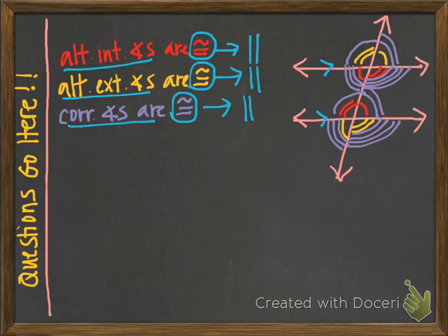Let's look at some of the other angle pairs — same side interior and same side exterior. These aren't going to be congruent; they're going to be supplementary. So if this same side interior pair — these two angles add up to 180 — then those two lines are parallel. Or if we look at our other pair of same side interior and can show these two angles add up to 180, then those two lines are parallel.